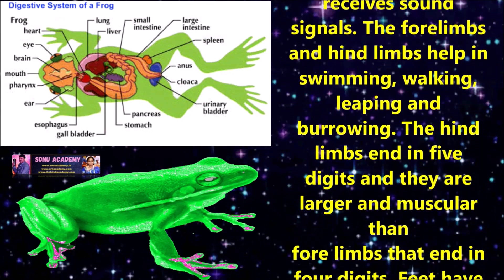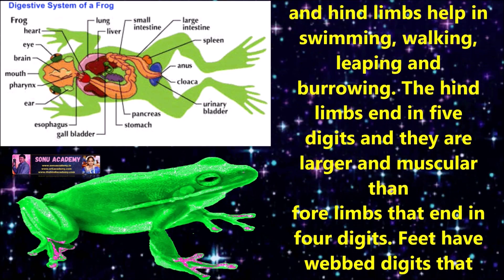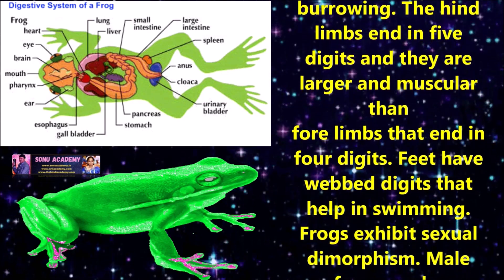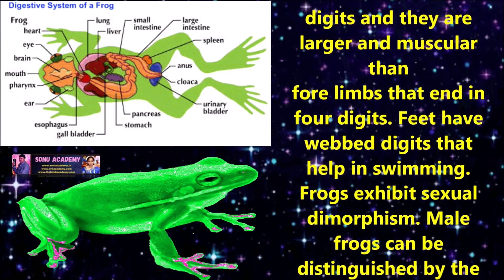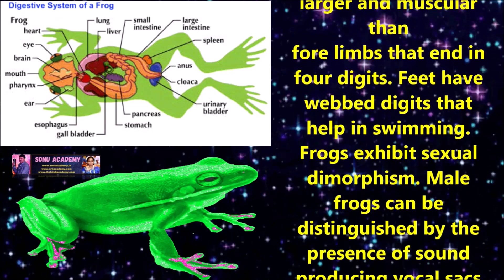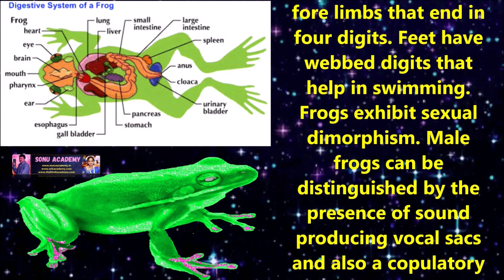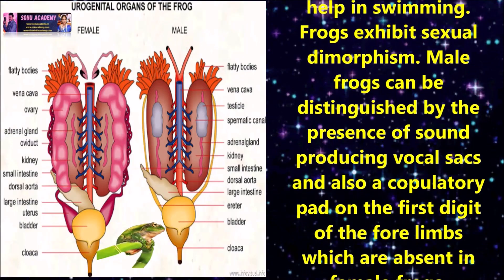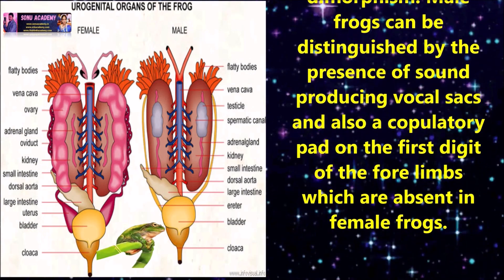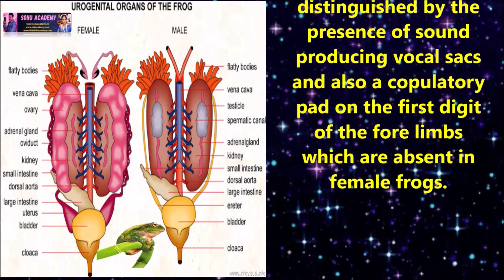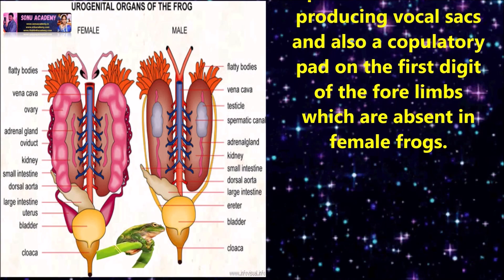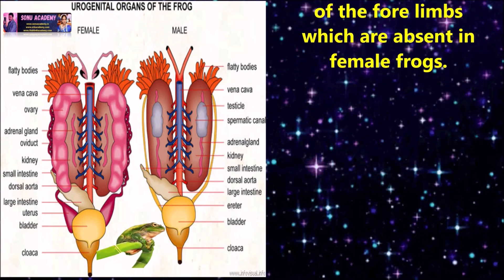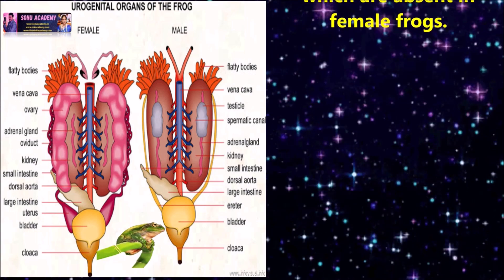The forelimbs and hind limbs help in swimming, walking, leaping, and burrowing. The hind limbs end in five digits and are large and muscular compared to the forelimbs, which end in four digits. The feet have webbed digits that help in swimming. Frogs exhibit sexual dimorphism. The male frog can be distinguished by the presence of sound-producing vocal sacs and a copulatory pad on the first digit of the forelimbs, which are absent in the female frog.